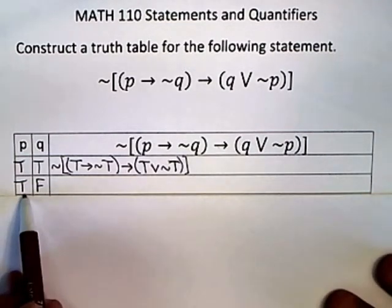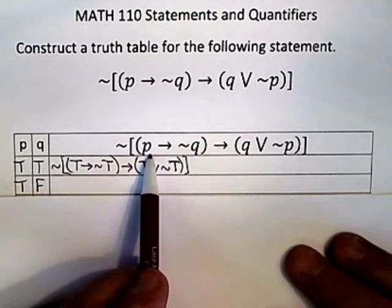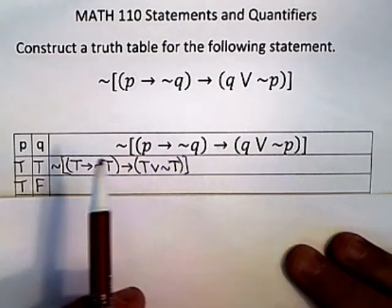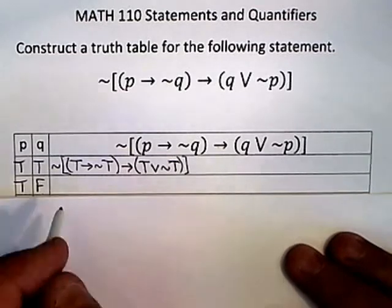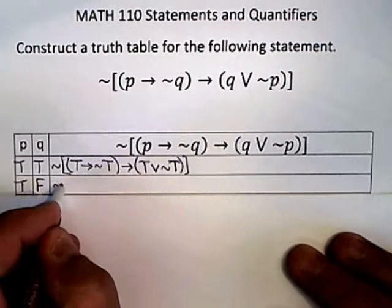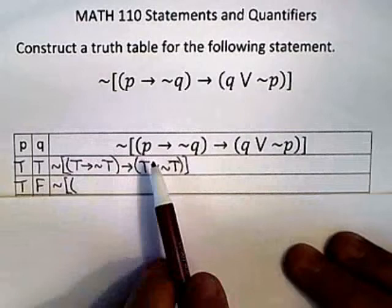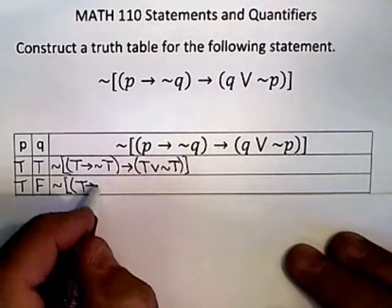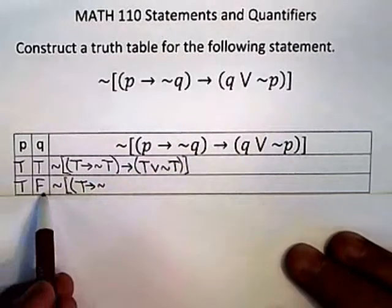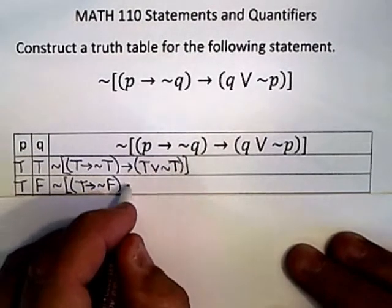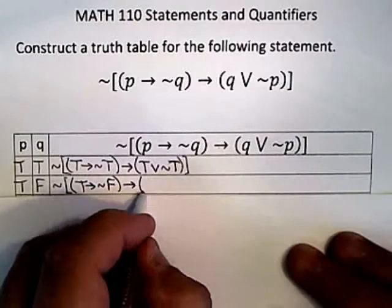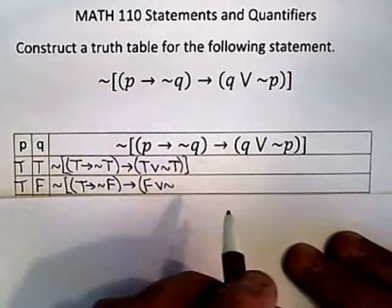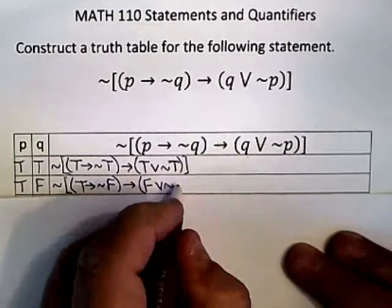This time, I'm assuming P is true, but this time Q is false. So everywhere there's a P, I put a T, a capital T for true, and everywhere there's a Q, I put a false, an F for false. So I get negation of P, this time stays true, implication, not Q, but this time Q is false. Implication, Q is false this time, or not P, and P is true, so it would be not T.